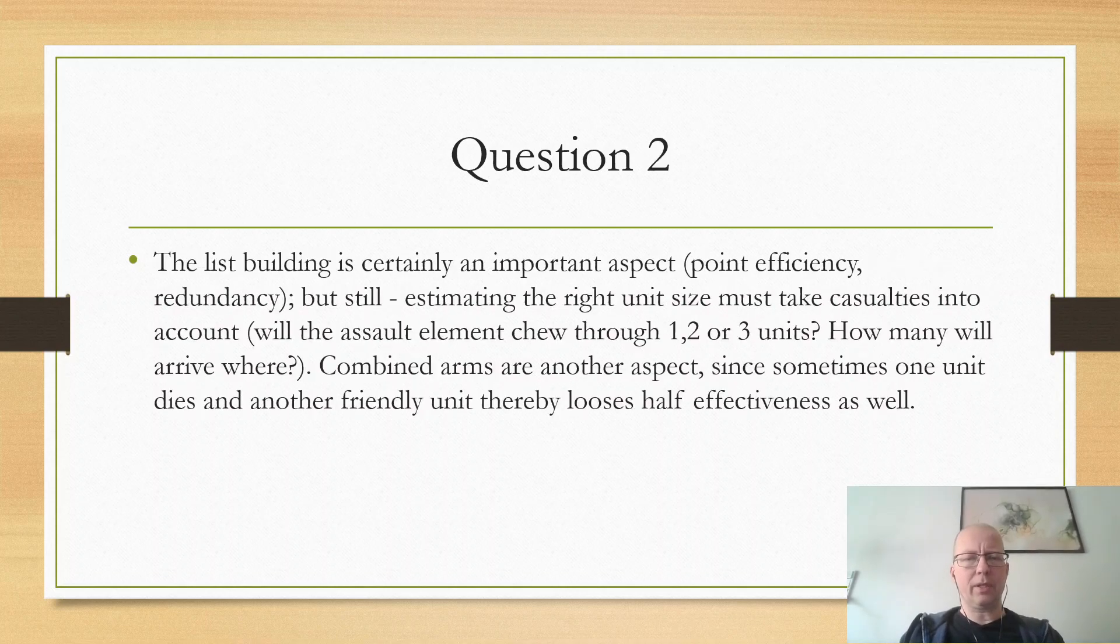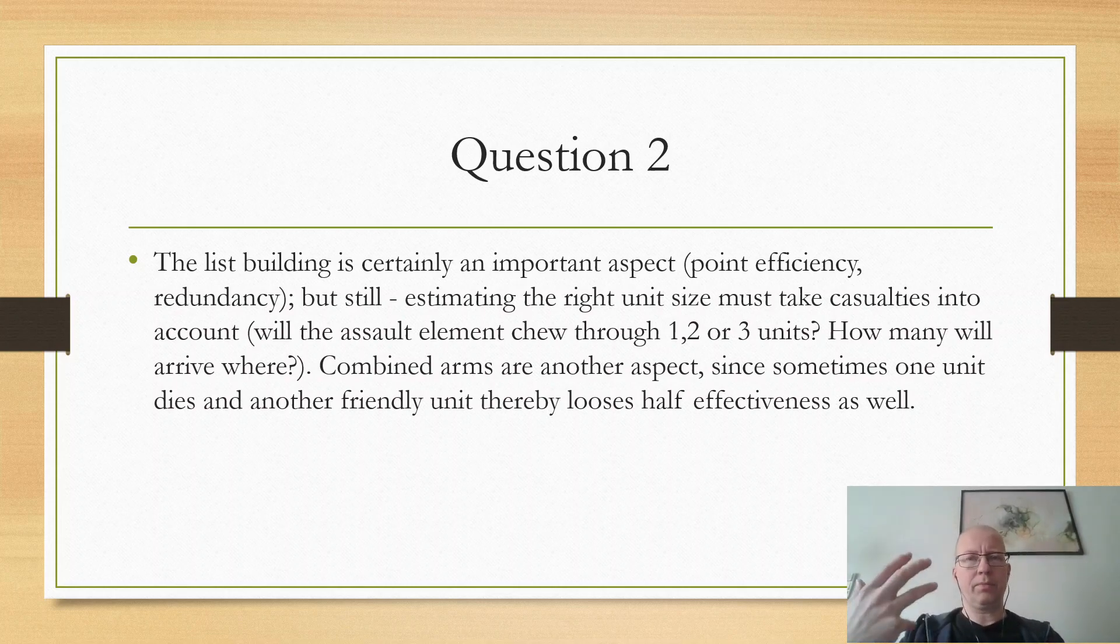And I think that actually could work really well for 40K as well. Doing that. Thinking that. But that does mean that you're going to have to lower the points costs so that you can take a lot of different units and a lot of infantry, basically. Make sure infantry is really cheap in your system and you can take a lot of it. And you have to take a lot of it for some reason. Because it's important. Infantry is what's fun. Question number two. The list building is certainly an important part of point efficiency, redundancy. But still, estimating the right size of units must take casualties into account. And it does. Will the assault unit do one, two, or three units? How many units would arrive? Combined arms is another aspect since sometimes one unit dies and another friendly unit thereby loses some of its effectiveness. That combined arms thing, that's mostly a 40K thing. But I really think you should continue with that. Yes. It's one of the things that I really love about 40K. It's the ability to synergize different units together. Really like that. It doesn't happen as much in Bolt Action. I think it should happen more.